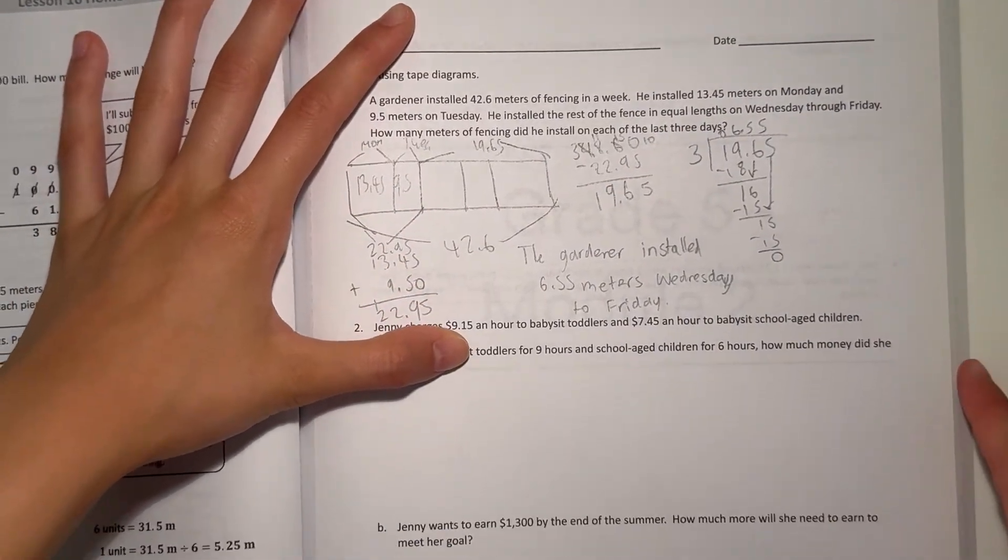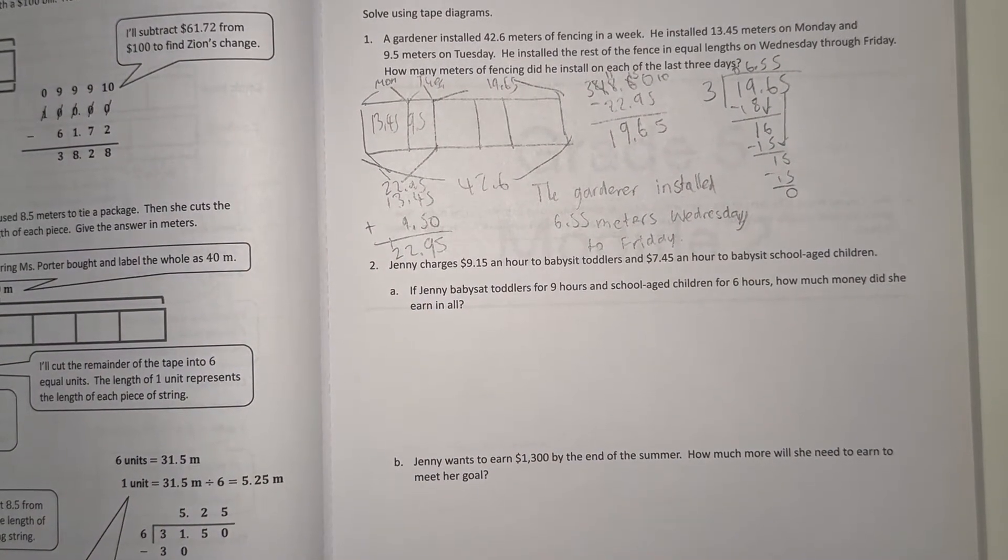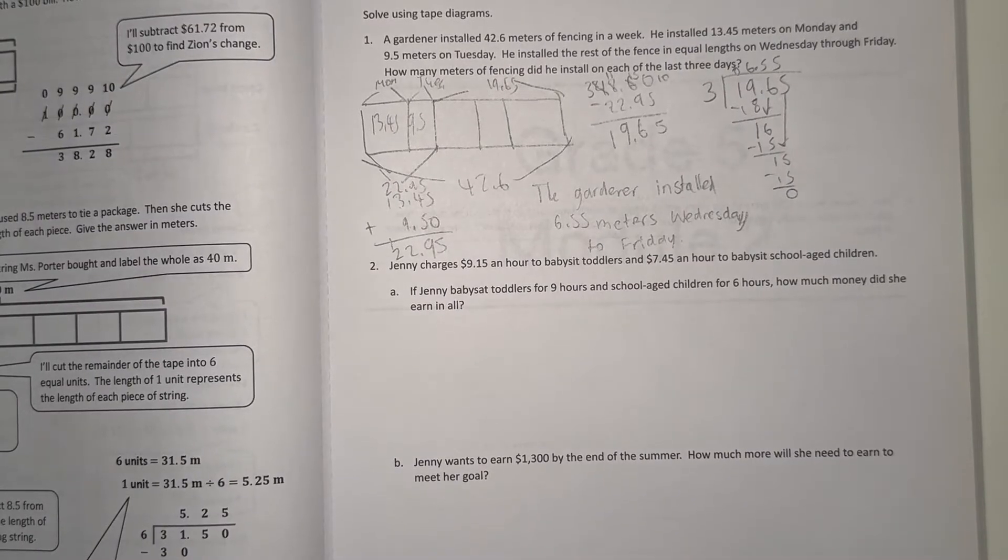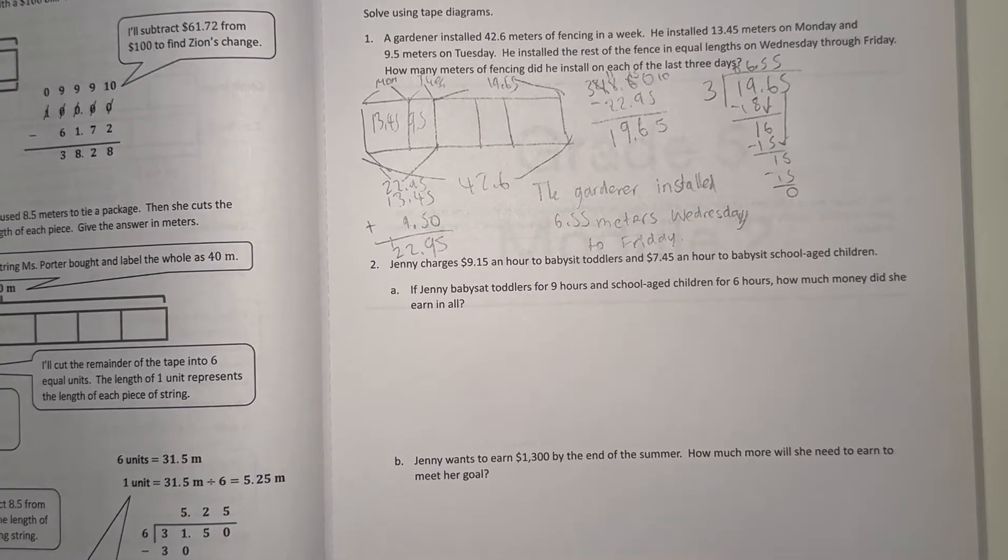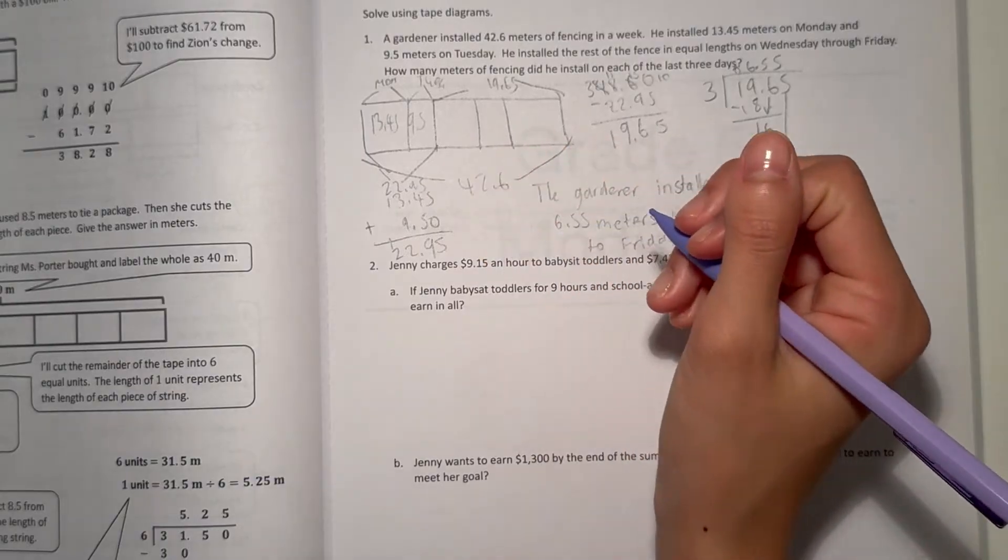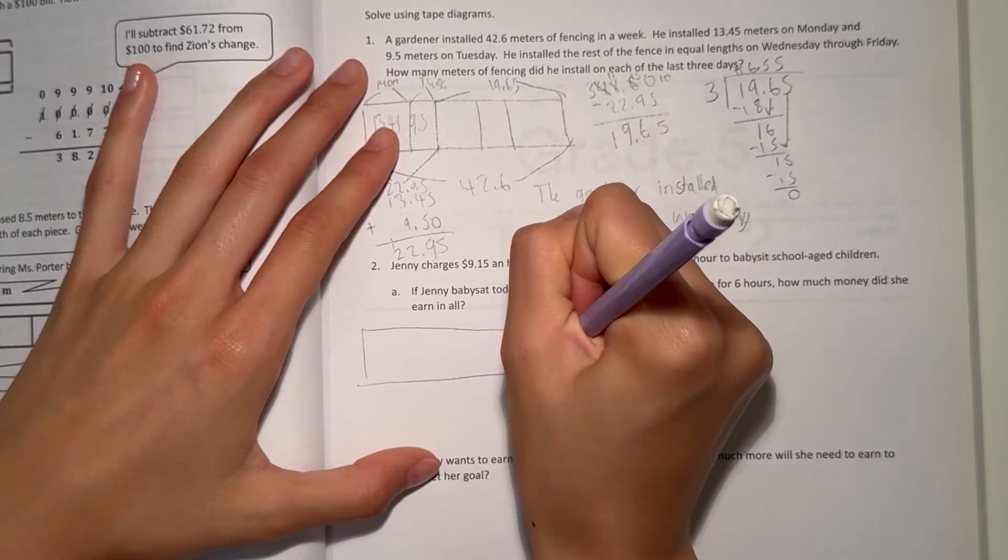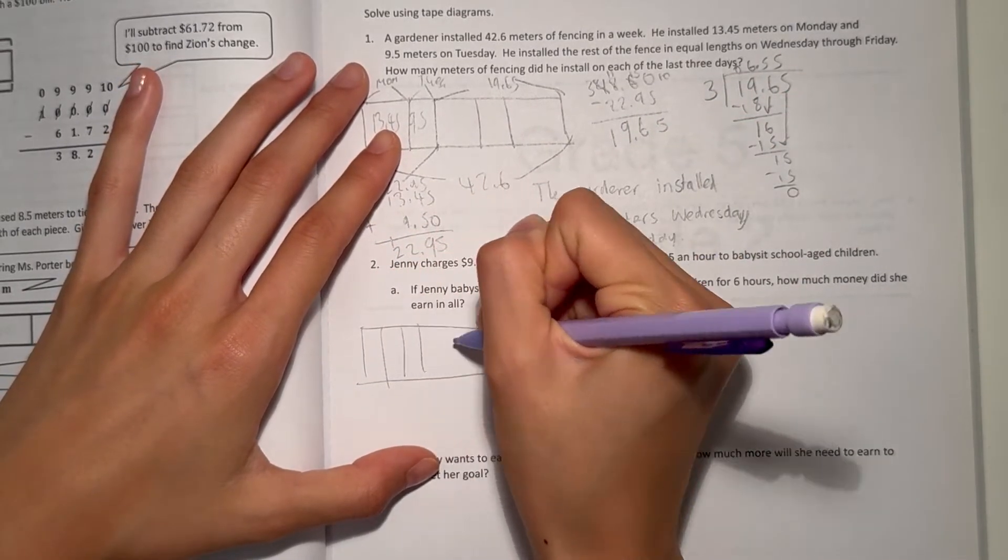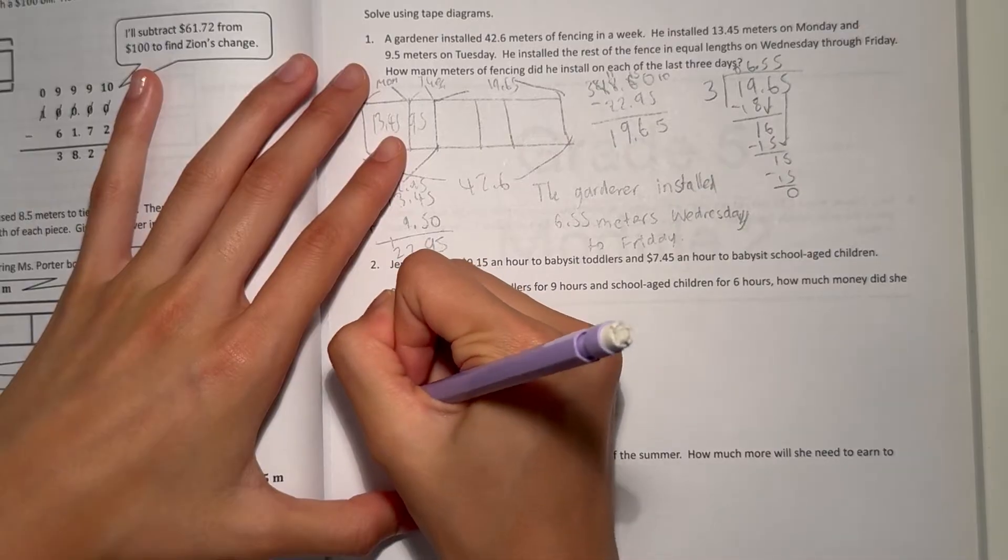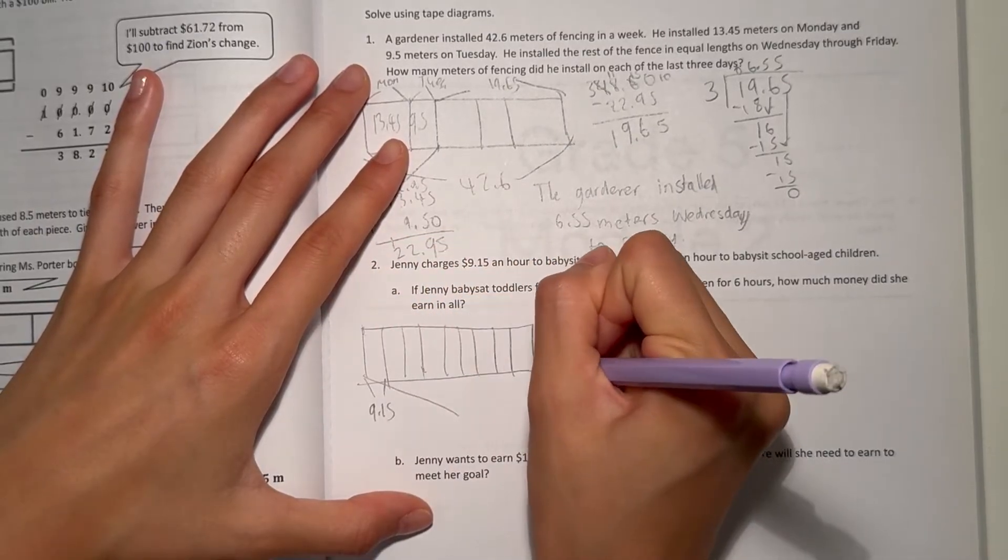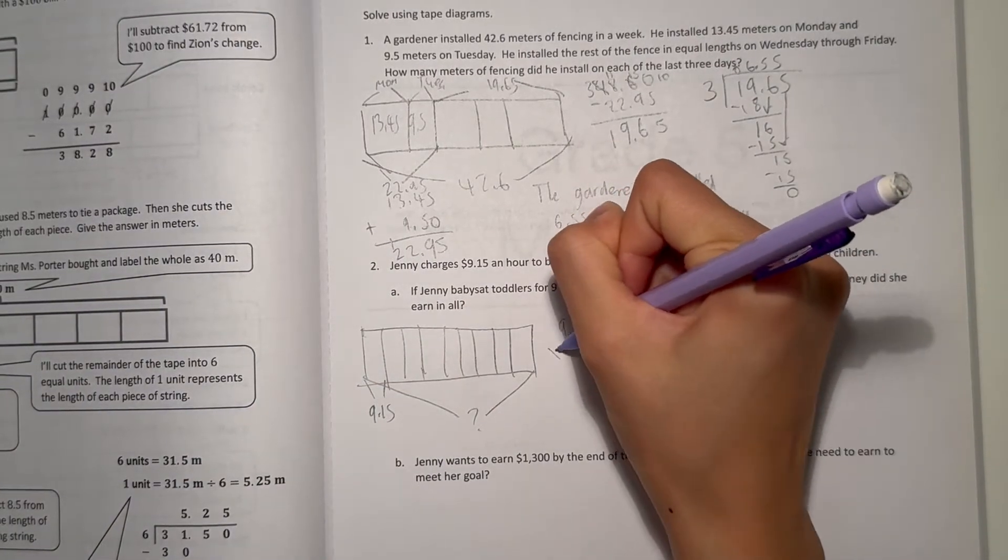Number two: Jenny charges $9.15 an hour to babysit toddlers and $7.45 an hour to babysit school-aged children. If Jenny babysat toddlers for 9 hours and school-aged children for 6 hours, how much money does she earn in all? So toddlers for 9 hours, each hour is $9.15, so we want to find out the total: 9.15 times 9.